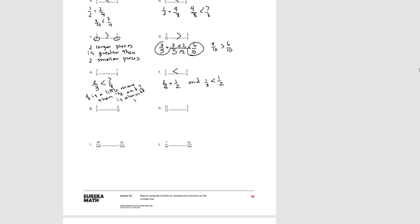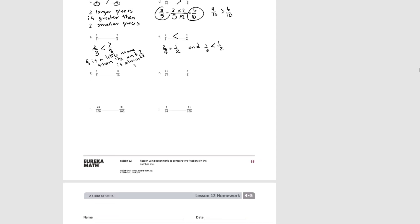For G: two thirds is greater than five tenths. Five tenths is equal to one half, and two thirds is greater than one half. For H: eleven twelfths is greater than two fifths — eleven twelfths is almost one, and two fifths is less than half.